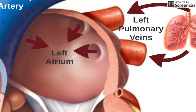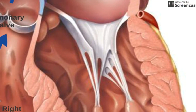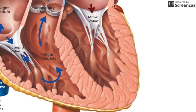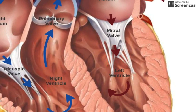Oxygenated blood gets trapped in the left atrium until another valve opens. This valve is called the mitral valve. Blood passes the mitral valve to enter the left ventricle. Notice how thick the walls of the left ventricle are. These walls are made up of cardiac muscle and they must be very strong because the left ventricle has the job of pumping blood through our entire body.